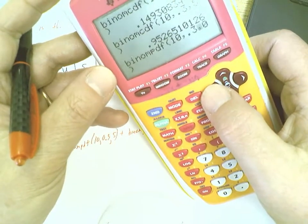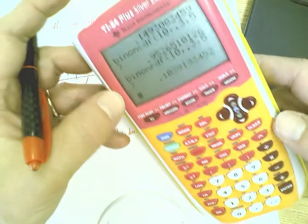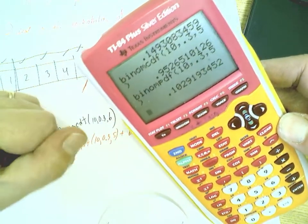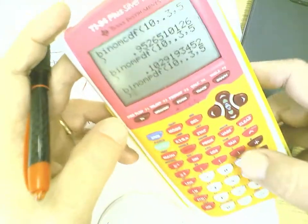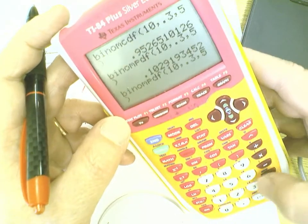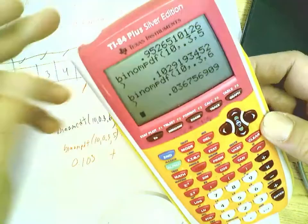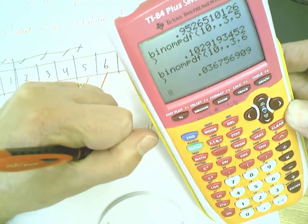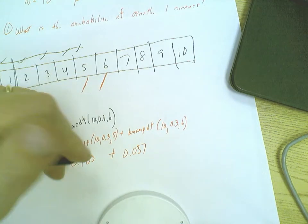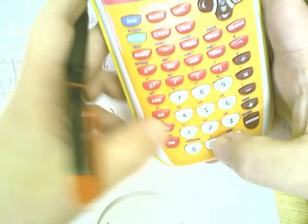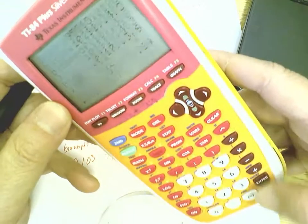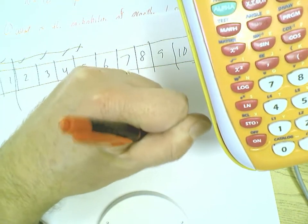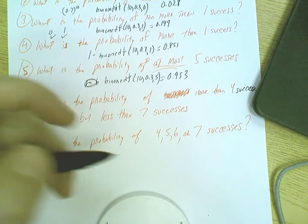Here we go. There's binomial PDF 10, 0.3, and let's do 5, 0.103. Binomial PDF, let's do 10, 0.3, and 6, 0.037. Add these two numbers up and I'll wind up with, so 0.103 plus 0.037, I'll wind up with exactly 14 percent, 0.14.